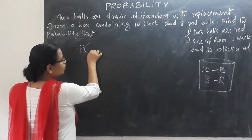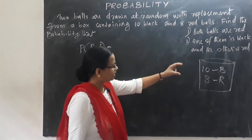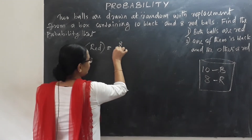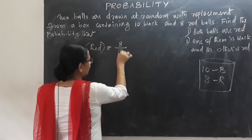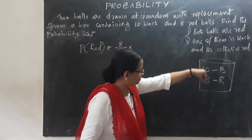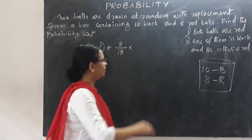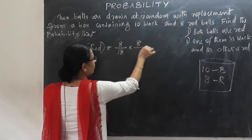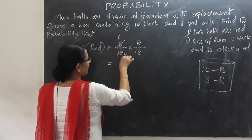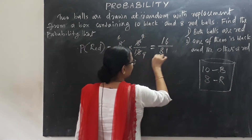For the first question, both balls are red. The probability of red is 8 by 18. Since we draw with replacement, the probability of both balls being red is 8/18 × 8/18. Simplifying 8/18 to 4/9, we get 4/9 × 4/9 = 16/81. This is the answer to the first question.